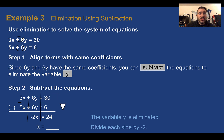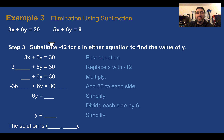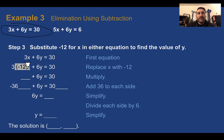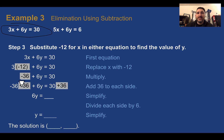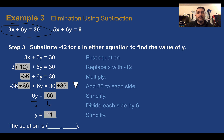So we have negative 2x equals 24. Dividing both sides by negative 2, x equals negative 12. Now substituting negative 12 back in for x using the first equation: 3 times negative 12 is negative 36, plus 6y equals 30. Adding 36 to both sides: 6y equals 66. Dividing both sides by 6, y equals 11. Our final solution is (negative 12, 11).